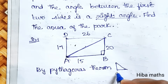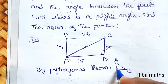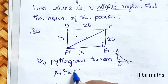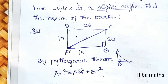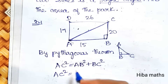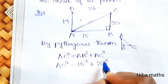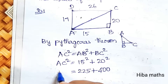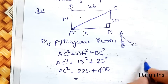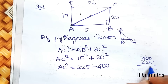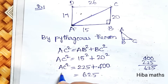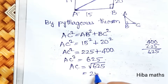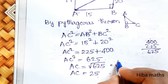In right angle triangle ABC, B is the right angle. The hypotenuse AC squared equals AB squared plus BC squared. So AC² = 15² + 20² = 225 + 400 = 625. Therefore AC = √625 = 25. The diagonal AC is 25 meter.